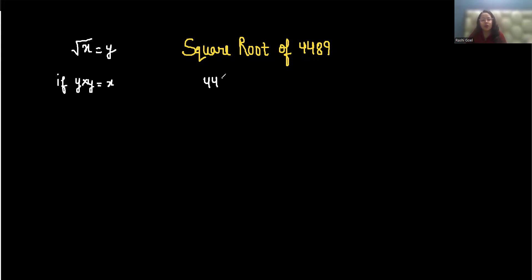So 4489 when divided by 67 gives 67 because it's a prime number. 67 divided by 67 is 1.